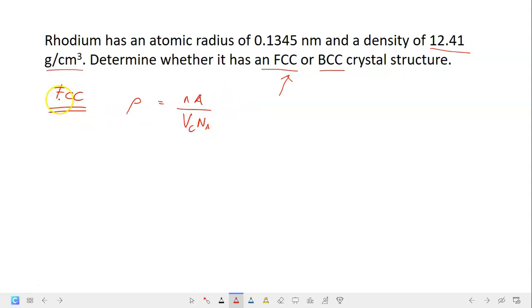When we assume it's an FCC, n here is the number of atoms per unit cell. For FCC, n equals to 4 atoms per unit cell. I hope you still remember this.